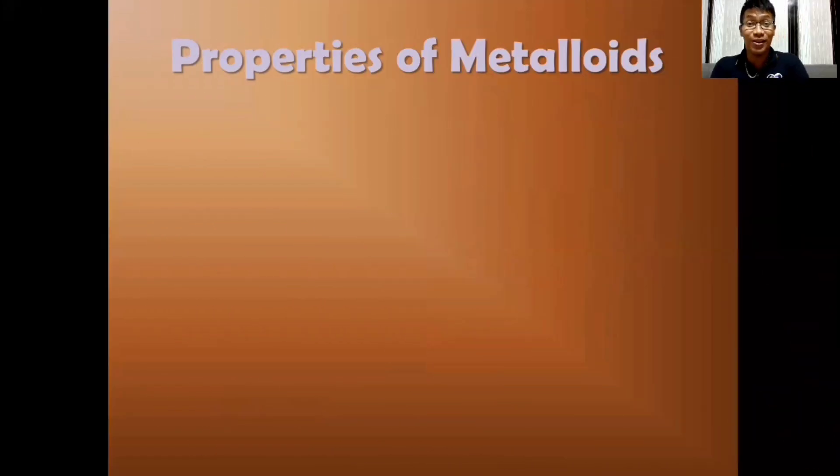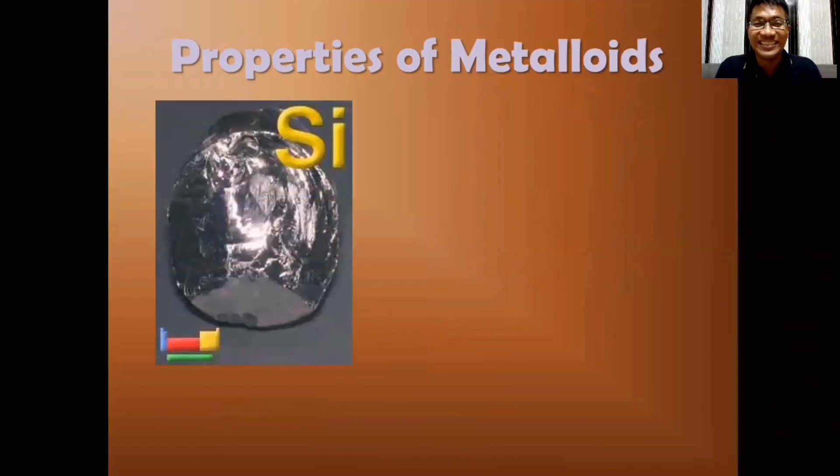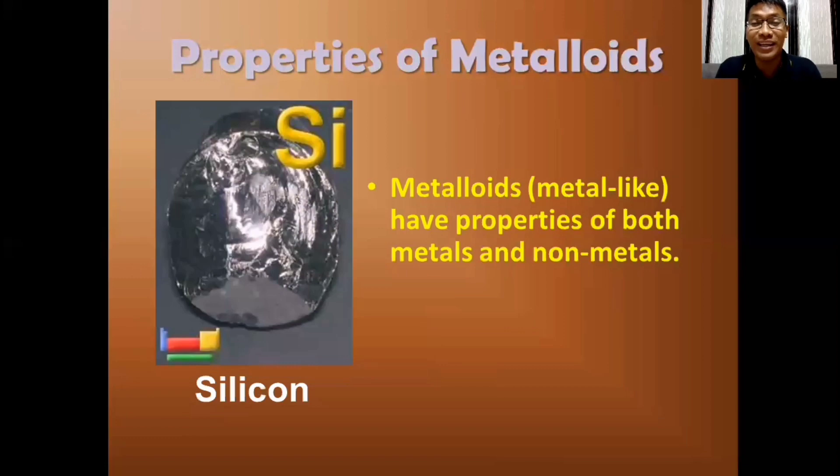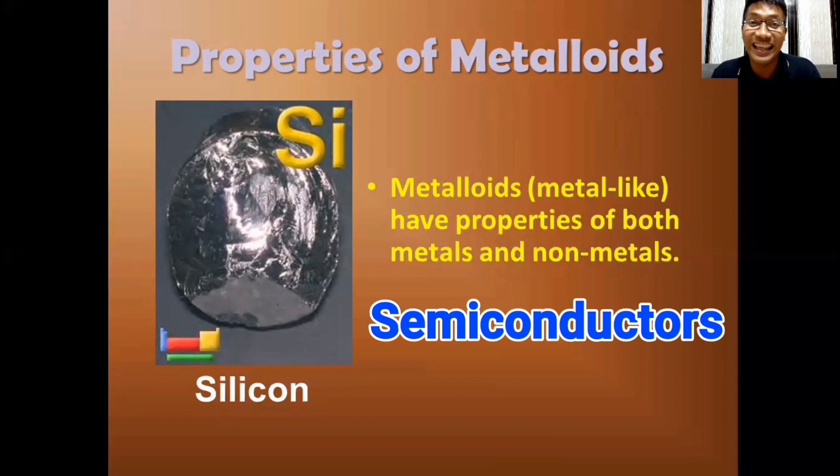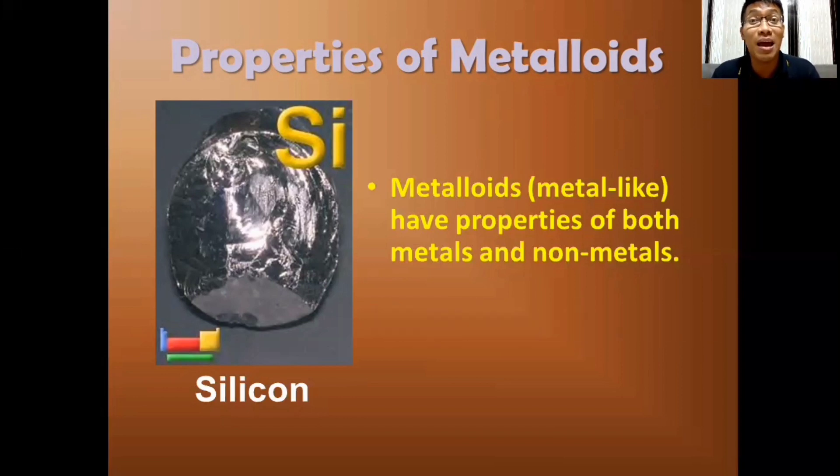Lastly, metalloids. As I said, metalloids have properties of both metals and non-metals. They are the threshold or intermediate. Commonly, metalloids are described as semi-conductors. And they are used in different appliances and most especially gadgets.